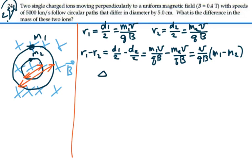The change in diameter divided by 2 is equal to the velocity over charge times magnetic field times the change in mass.